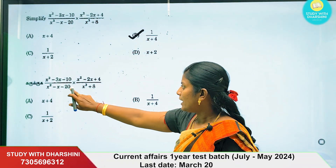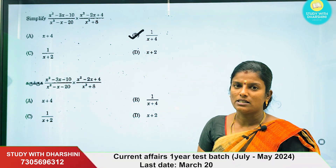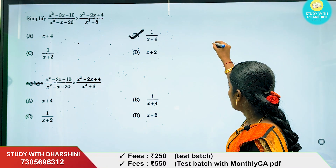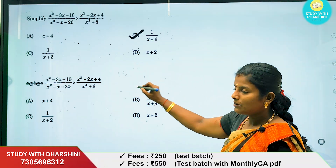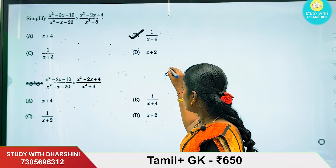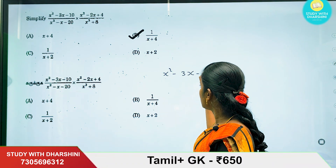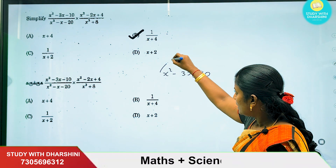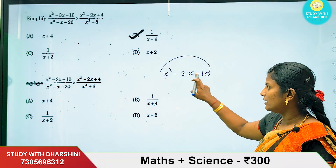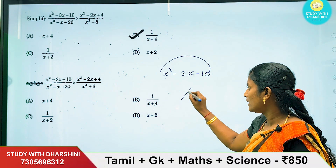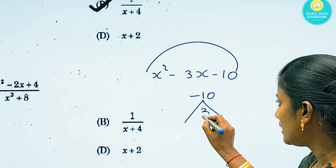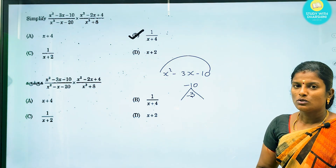So, for x squared minus 3x minus 10, we will use the shortcut method. We multiply the leading coefficient and the constant: 1 into minus 10 gives minus 10. The middle coefficient is minus 3. So we need two numbers that multiply to minus 10.